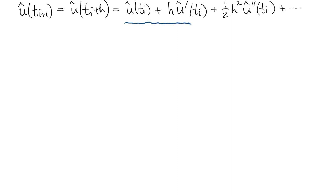Let's write out a Taylor expansion for the solution u-hat of an ODE. The first two terms here are the ones that are picked up by Euler's method. That's first order accurate.